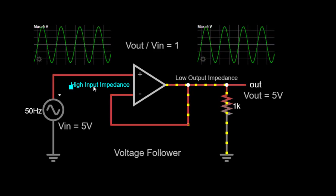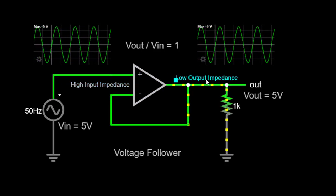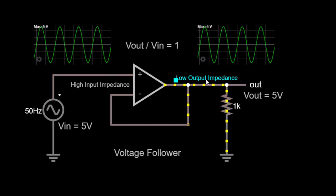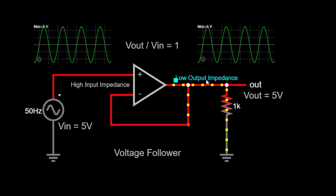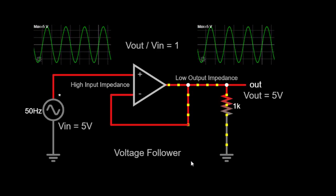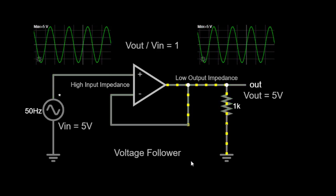Similarly, the low output impedance ensures that the load connected to the output does not affect the output voltage. The voltage follower acts as a buffer between the input voltage source and the load, isolating them from each other.